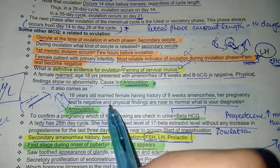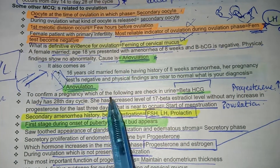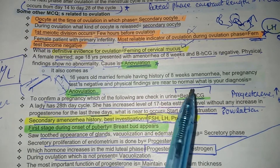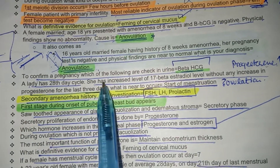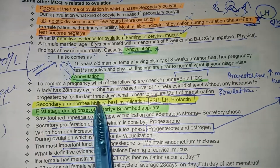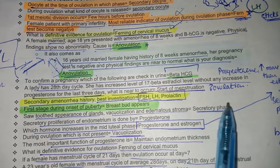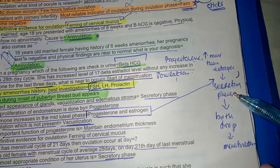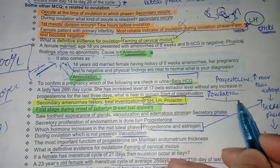A 16-year-old married female with 8 weeks of amenorrhea, negative pregnancy test, and near-normal physical findings — diagnosis is anovulation. To confirm pregnancy, beta-HCG is checked in urine at 14 days or in blood at 7 days. In a 28-day cycle, raised 17-beta estradiol without any rise in progesterone for 3 days indicates start of ovulation is about to occur — since estrogen peaks trigger the LH surge.